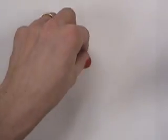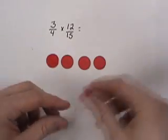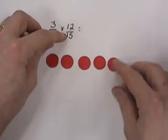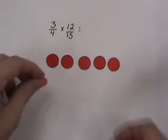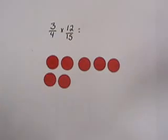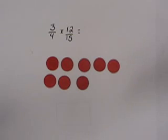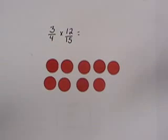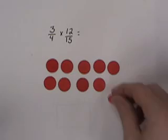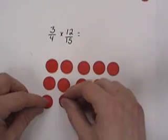To do that, we must take a look at the denominator of the fraction: fifteenths. That means our whole is going to be divided into 15 equal parts. Each counter represents 1 fifteenth. That means we need 15 in our whole.